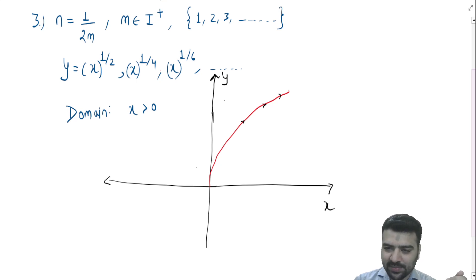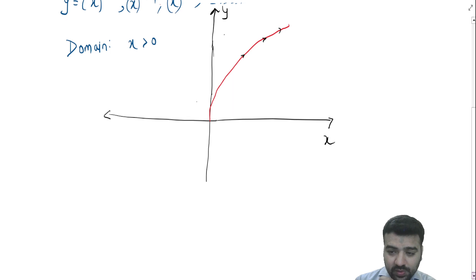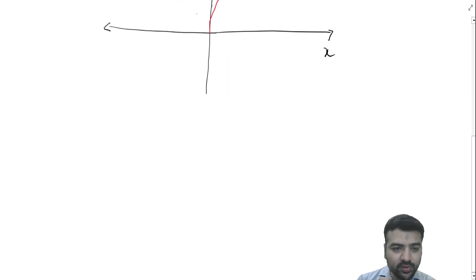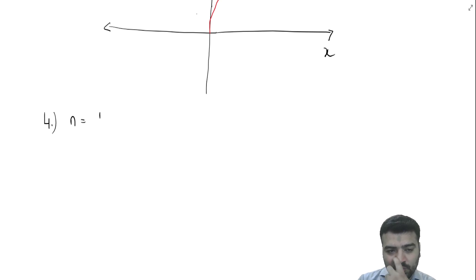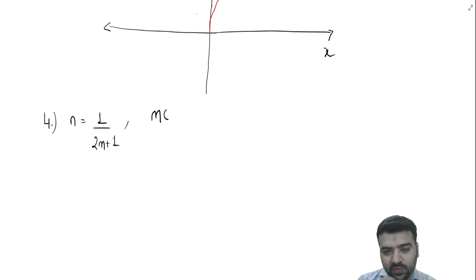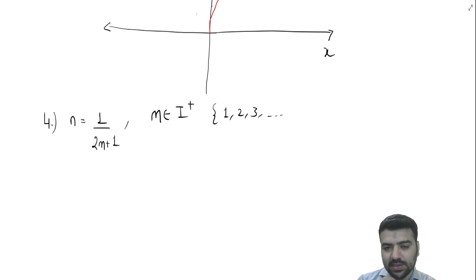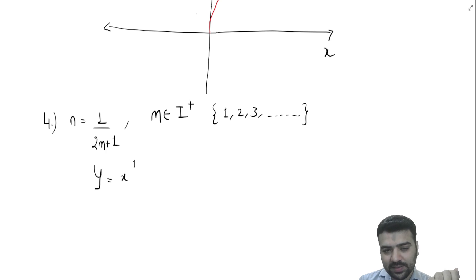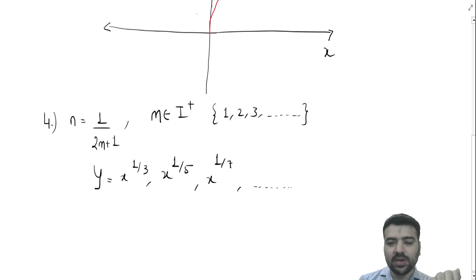Now let's move to the fourth case: when n is equal to 1 by 2m plus 1, where m belongs to positive integers — 1, 2, 3, and so on. These are odd roots. So y equal to x to the power 1 by 3, putting m equal to 1 gives 1 by 3, then 1 by 5, 1 by 7, and so on. Odd roots can accept negative values.